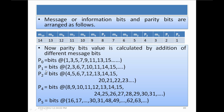For parity bit P1, which is at position 2, we add 2 bits and skip 2 bits alternately. So positions 2 and 3 are added, 4 and 5 are skipped, 6 and 7 are added, 8 and 9 are skipped, 10 and 11 are added, 12 and 13 are skipped, and 14 is added.